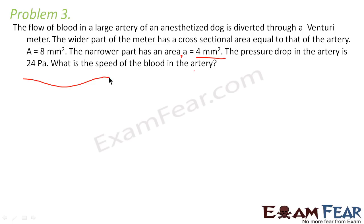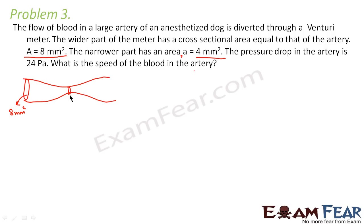When we talk of a Venturi meter, let us roughly draw it — this is how a Venturi meter looks. The wider part has a cross-sectional area of 8 mm square, and the narrower part has an area of 4 mm square. The pressure drop in the artery is 24 Pascals, meaning the difference in pressure that arises is 24 Pascals. We have to calculate the value of speed.